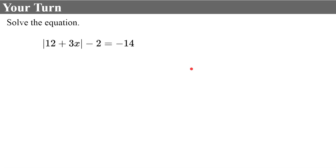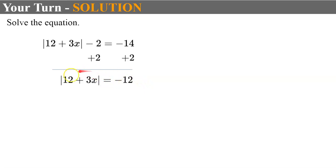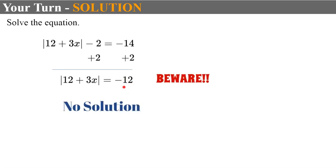Try another one — pause and come back when you're ready. Welcome back. Isolate the absolute value expression by adding 2 to both sides, giving the absolute value of 12 plus 3x equals negative 12. The absolute value of any expression will never be negative 12, so there is no solution. Make sure you're always checking that the absolute value of something is always positive.